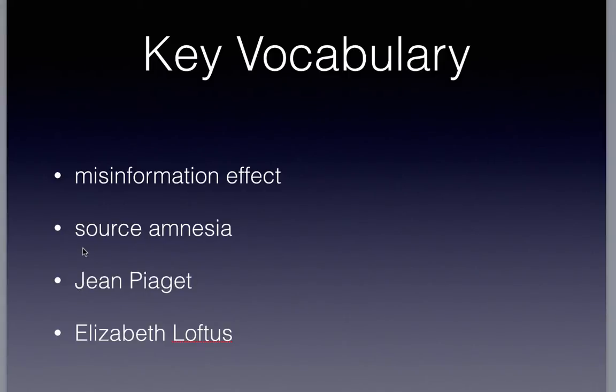Jean Piaget's famous example is that he remembered into his adult life that his nursemaid — basically a nanny — saved him from being abducted by somebody. He remembered this story over and over and 100% believed it was his story, when in fact he learned in his adult life that it didn't happen to him at all. His nanny was telling a story that had happened to her as a kid, but he had heard it so many times growing up that he thought it had happened to him. That's source amnesia — you forget the source of the information.